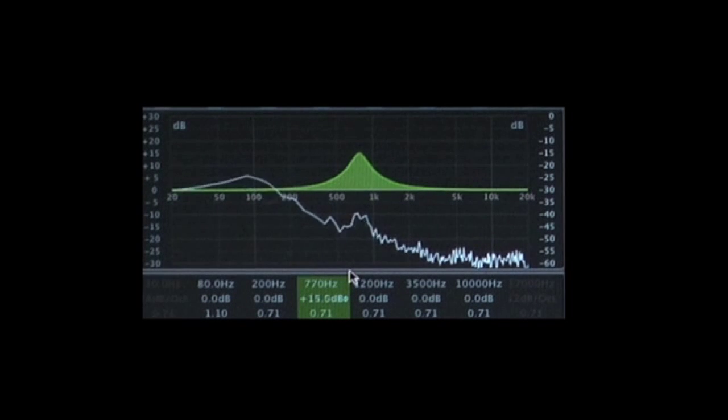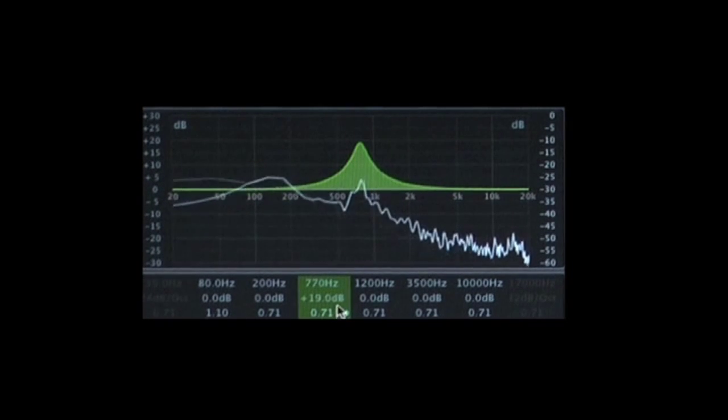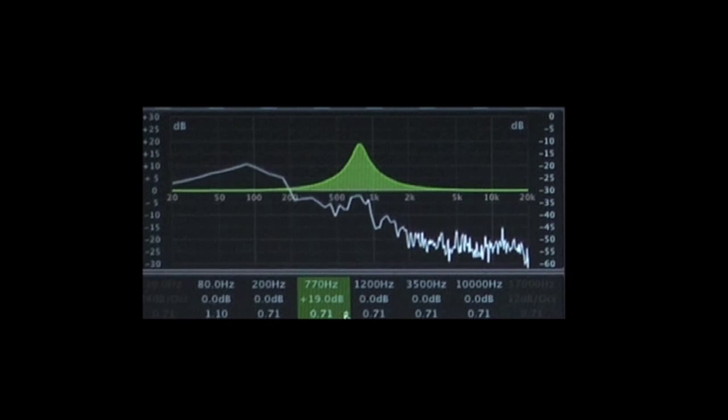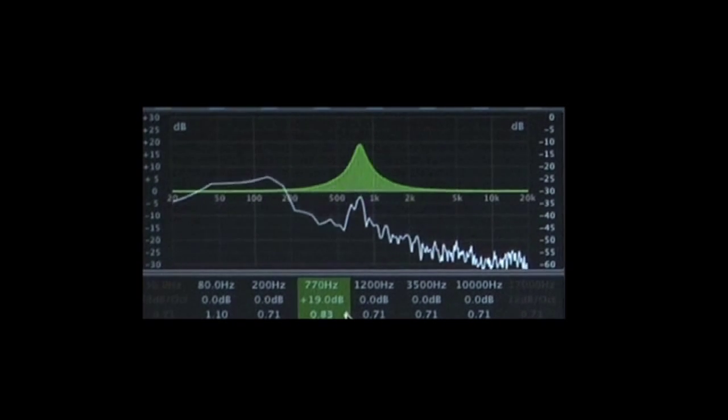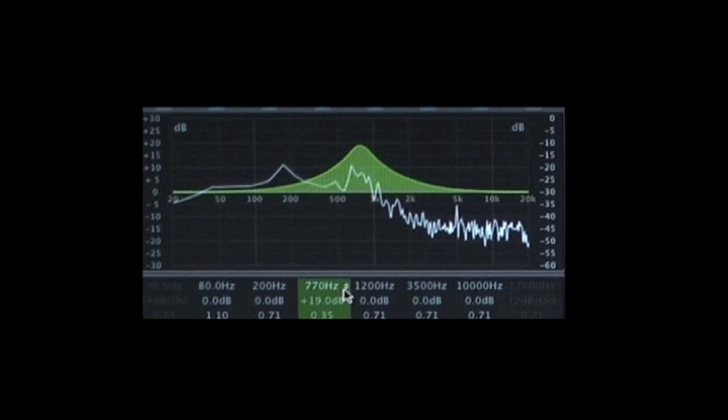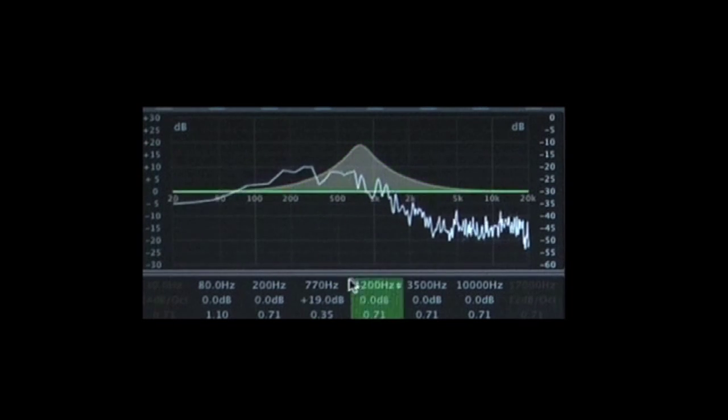The main frequency you boost or cut is called the center frequency. The gain determines the change in amplitude of that frequency, and the Q, or bandwidth, determines how wide a range of frequencies around the center frequency is also affected.